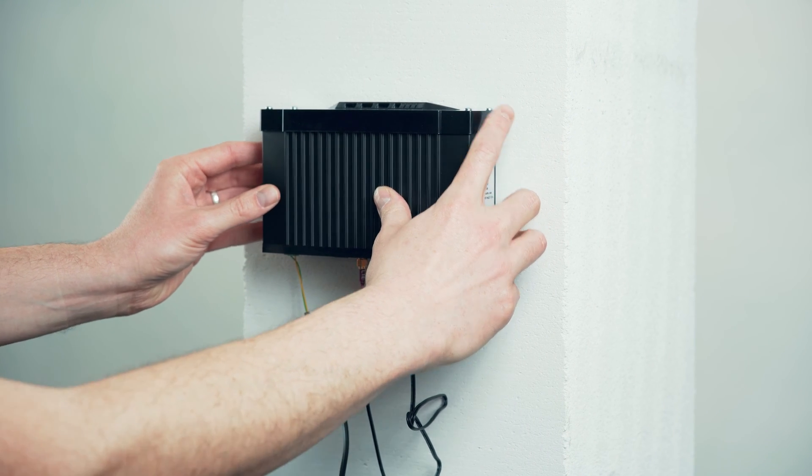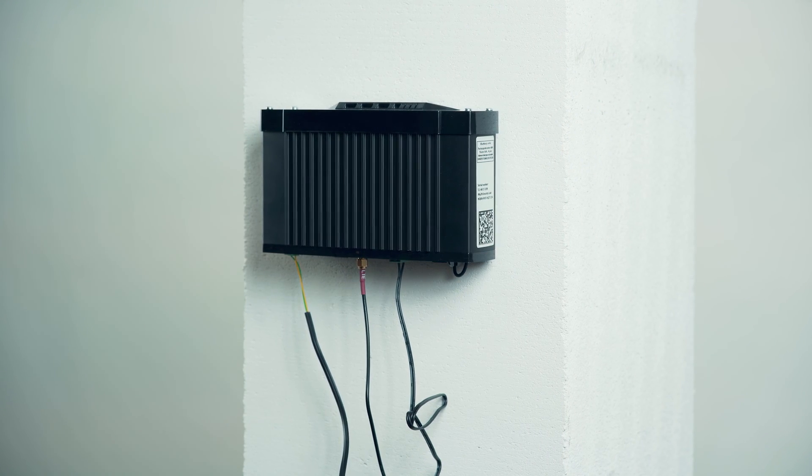If there's a DIN rail in the shaft, you can easily install the 2N EasyGate IP on that as well.